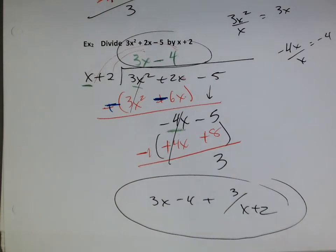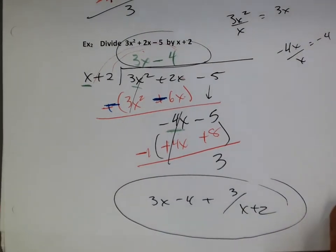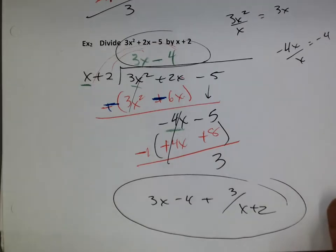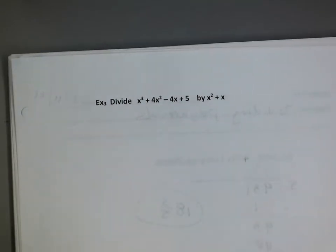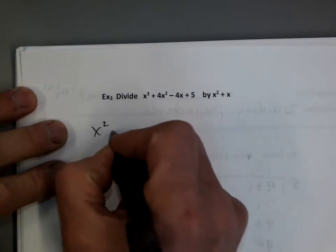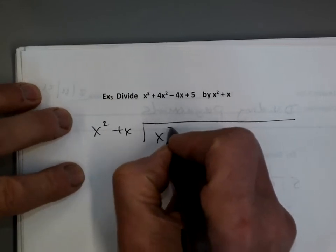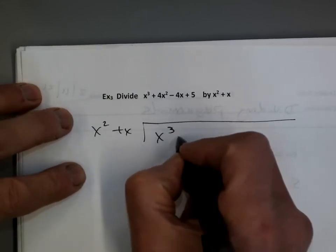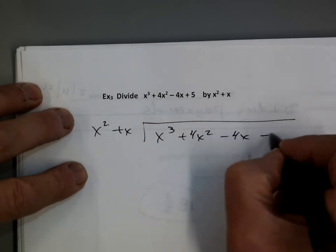Let's do one more. So it's the exact same thing as long division, except it's got x. Okay, example 3. So we're going to divide — this is just one more problem so we get better at it. We've got x squared plus x divided into x cubed plus 4x squared minus 4x plus 5.